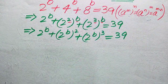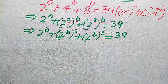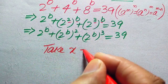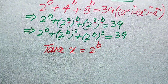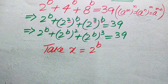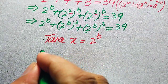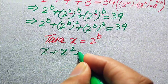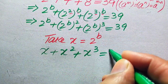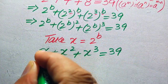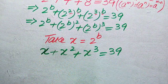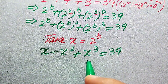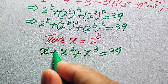The base of all these terms is 2 to the power of b, so we substitute x equals 2 to the power of b. When we do this, the equation becomes x plus x squared plus x cubed equals 39. After this substitution, our exponential equation becomes a cubic polynomial in x.